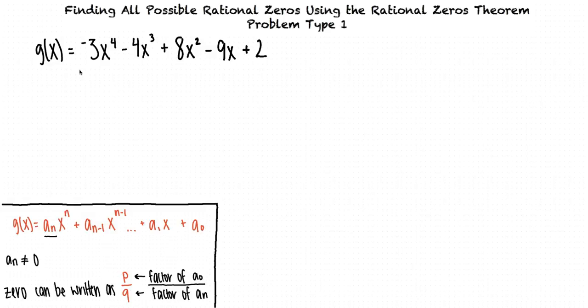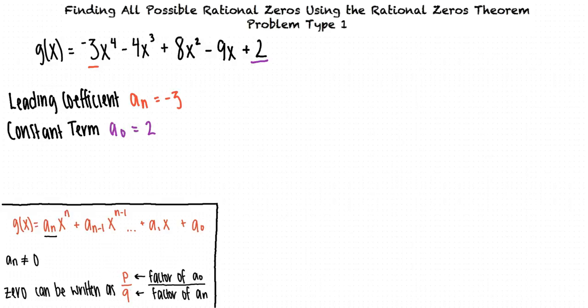A sub n is the leading coefficient, so a sub n equals negative 3. A sub 0 is the constant term, so a sub 0 equals 2. Using the Rational Zeros Theorem, we know that the only possibilities for rational zeros of g of x are numbers of the form p divided by q, where p is a factor of a sub 0 and q is a factor of a sub n.